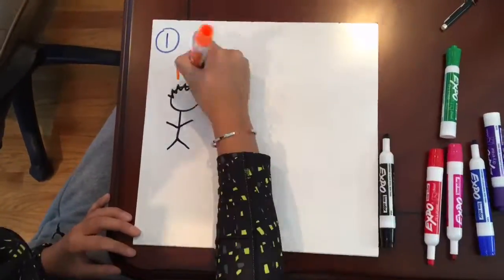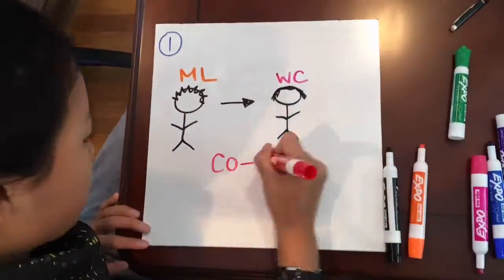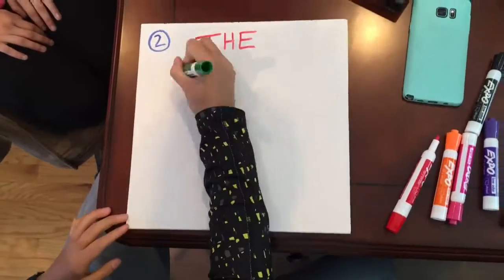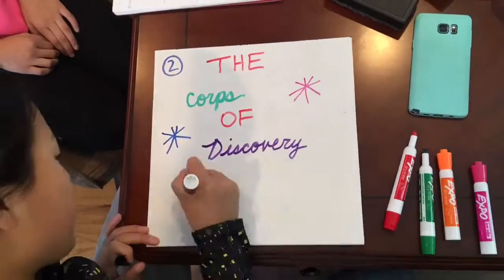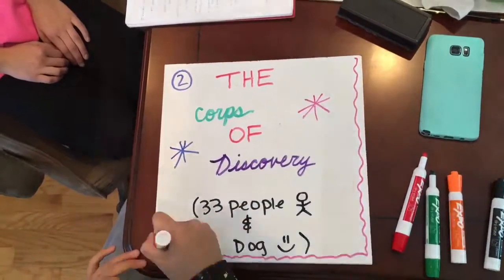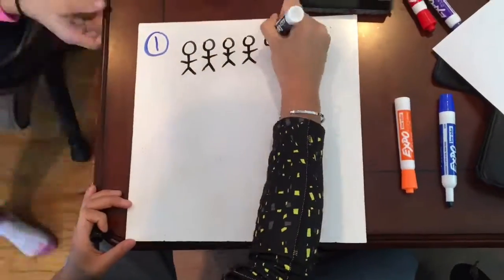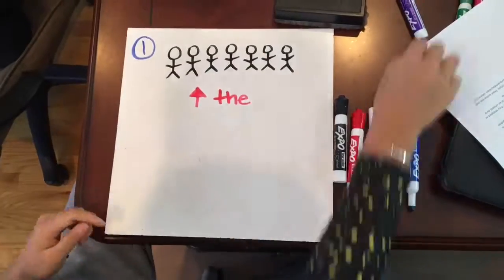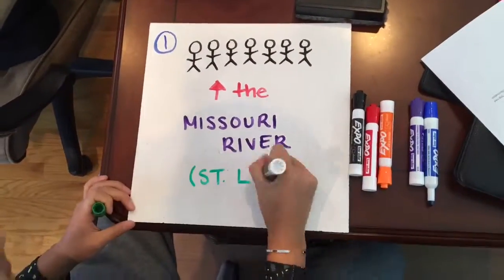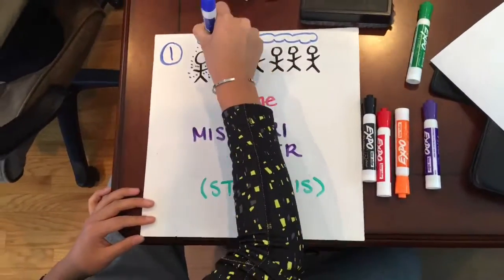Lewis chose William Clark, his previous military superior, to head the expedition with him. They collected the Corps of Discovery, which in total contained 33 men and one dog. On May 14, 1804, the Corps of Discovery began its trek up the Missouri in St. Louis in the pouring rain.